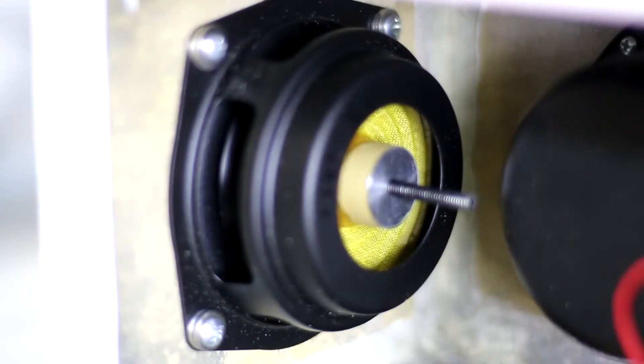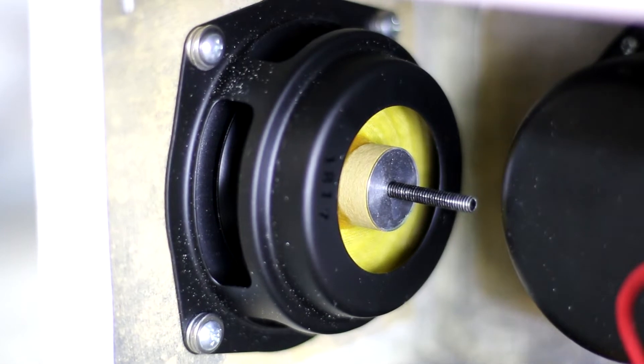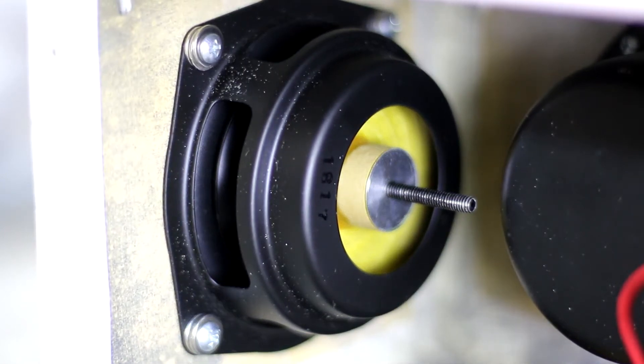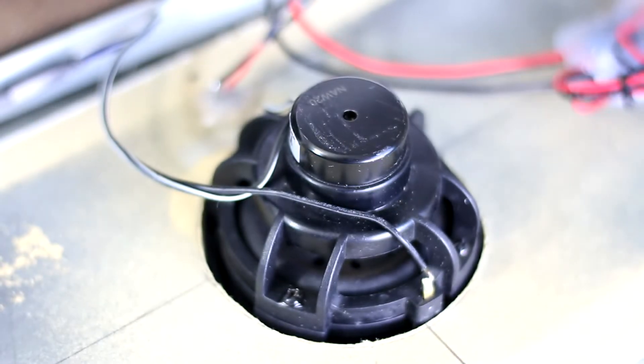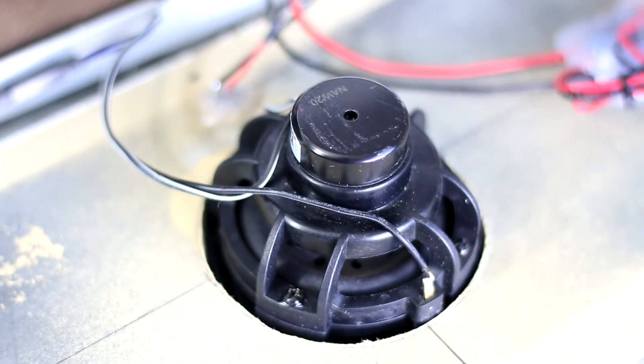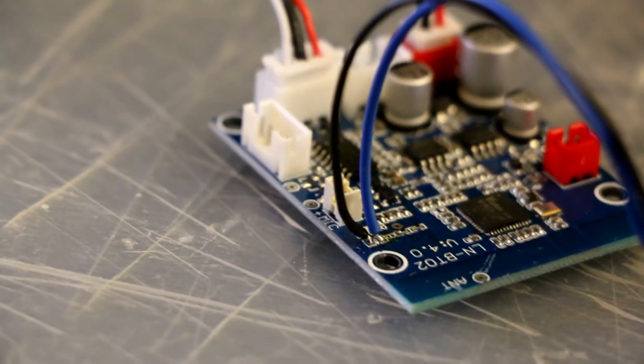Next, I soldered some speaker wires to the subwoofer driver and speakers. Next, I removed the Bluetooth indicator LED from the receiver and soldered two wires so I can extend the LED outside the speaker box.